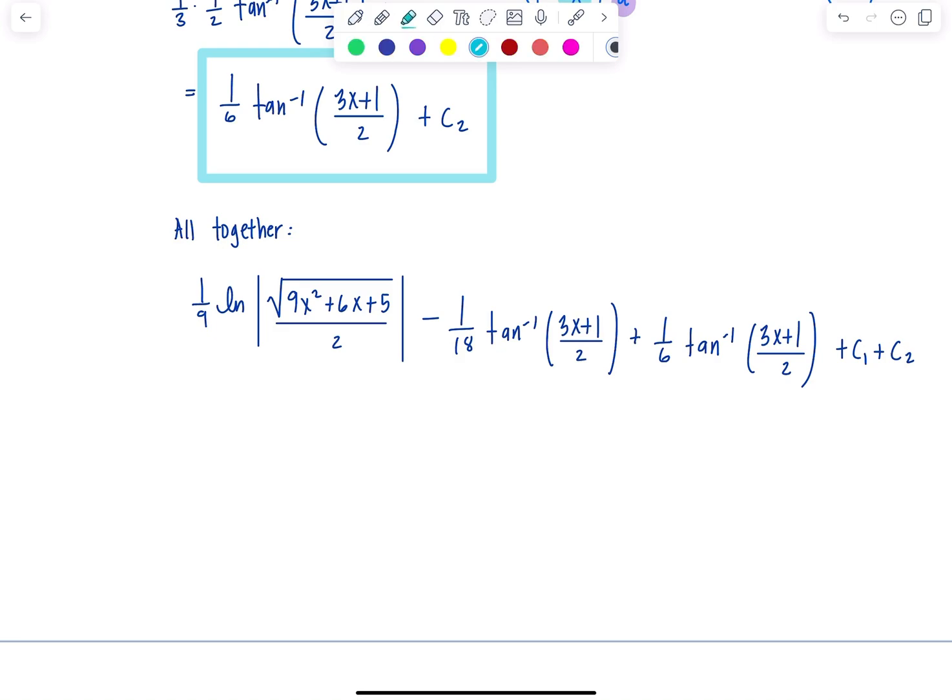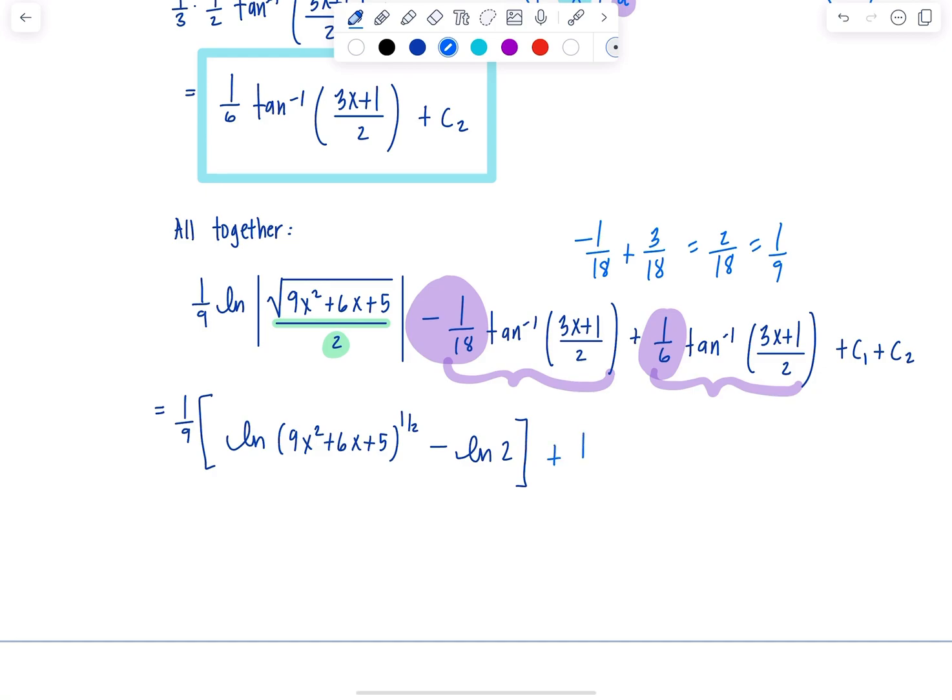Standard little cleaning technique we do when you have natural log with just a constant in the denominator. We're going to use our log properties to split it up and simplify. We've got 1 ninth, and I'm going to write this as ln 9x squared plus 6x plus 5 to the 1 half power minus ln of 2. And notice here, these are like terms, they're both tan inverse of the same quantity, so we have to add the coefficients together, negative 1 18th plus 1 6th, so that's 2 18ths or 1 9th. So I have plus 1 9th tan inverse 3x plus 1 over 2, plus c1 plus c2.